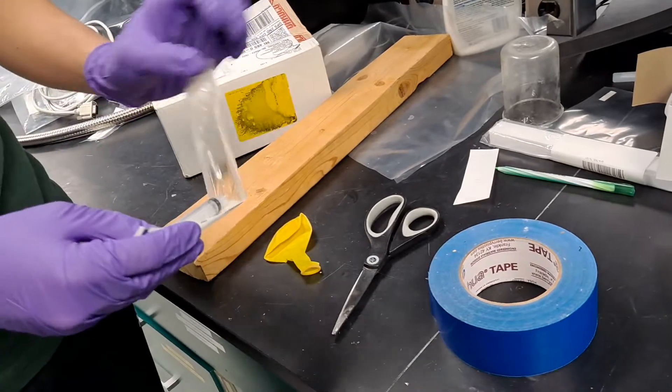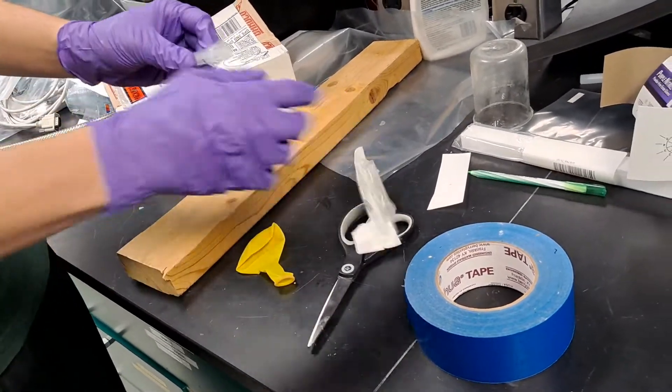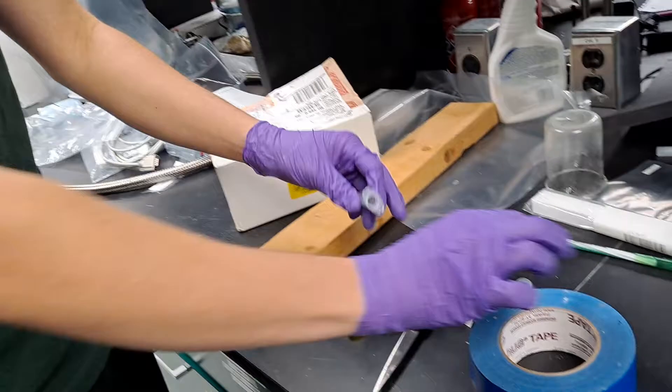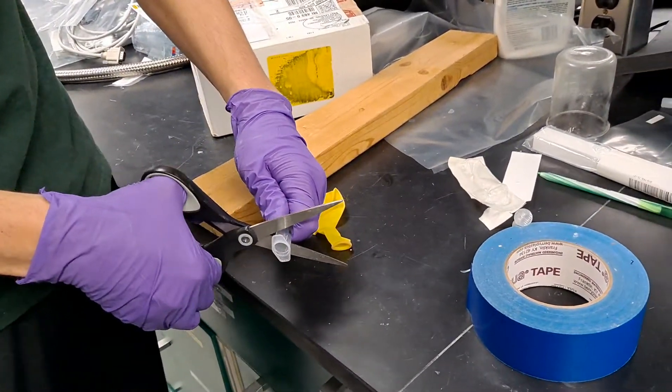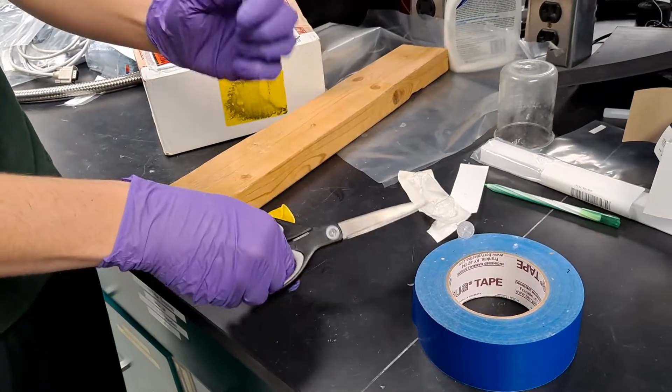First, what you do is you take the syringe out of the packet and you take the stopper out. Then use the scissors to cut off the end, like that.